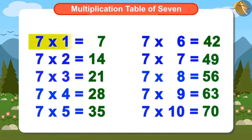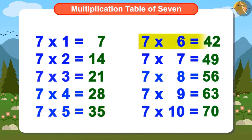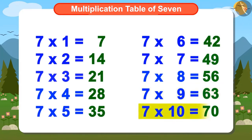Let's memorize the table of 7 by singing: 7 ones are 7, 7 twos are 14, 7 threes are 21, 7 fours are 28, 7 fives are 35, 7 sixes are 42, 7 sevens are 49, 7 eights are 56, 7 nines are 63, 7 tens are 70.